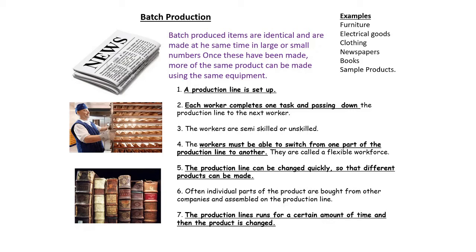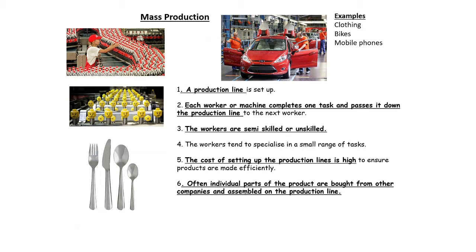Workers need to switch from one part of the production line to another, which is where flexible working comes in. Productions can be changed quickly — take Greggs, for example: they don't just make sausage rolls all day, they also make steak bakes, sandwiches, and donuts. A lot of individual parts will be bought in from other companies, like bolts, screws, and pins, because it would cost more to set up to make those parts than to just buy them in. Common examples of batch production include furniture, electrical goods, clothing, and newspapers.